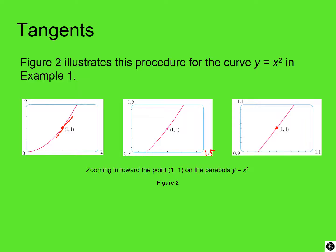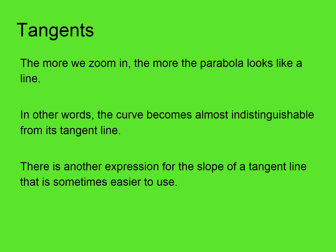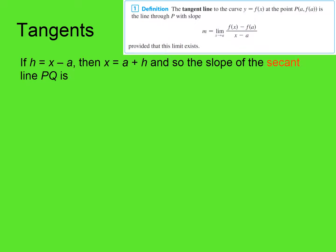Here's the tangent line — it has a certain slope. As we zoom in, it appears that we have exactly that line. The more we zoom in, the more the parabola looks like a line; the curve becomes almost indistinguishable from its tangent line. There is another expression for the slope of the tangent line that is sometimes easier to use.